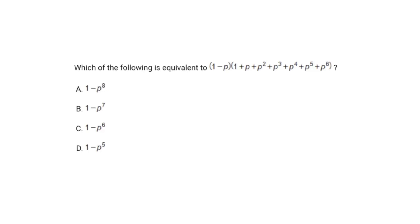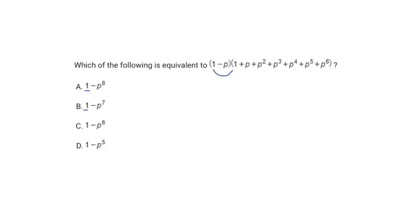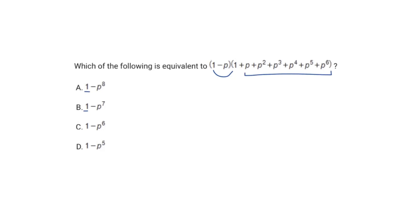All the answer choices have a coefficient of 1, and that makes sense because 1 times 1 is just 1, and no other values will give you just a coefficient by itself — everything else will be in terms of p. If I distribute the 1 to all these values, I get 1 times 1, 1 times p, and 1 times p squared, so everything multiplies by 1 and that's what I'm left with.